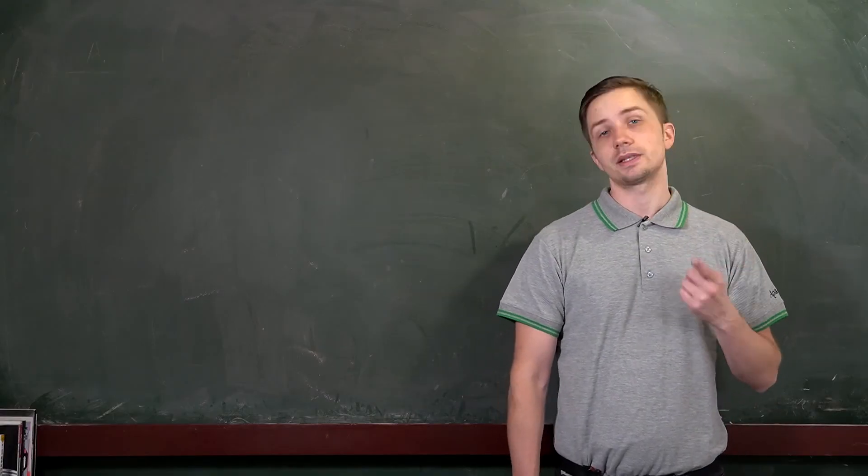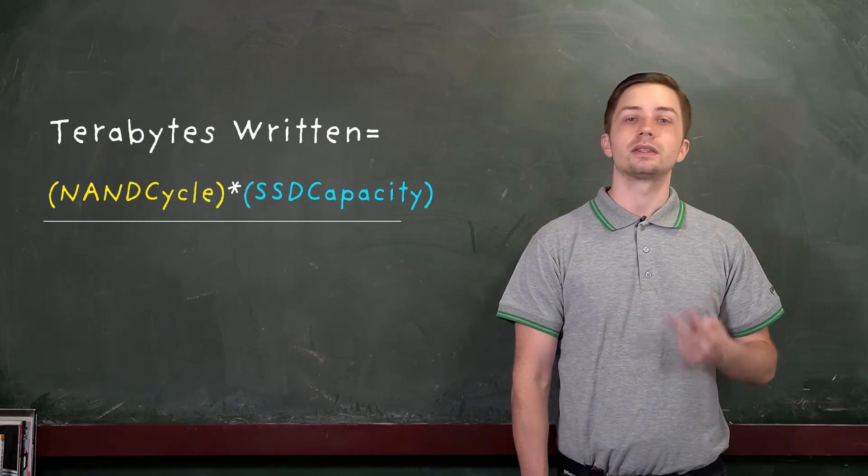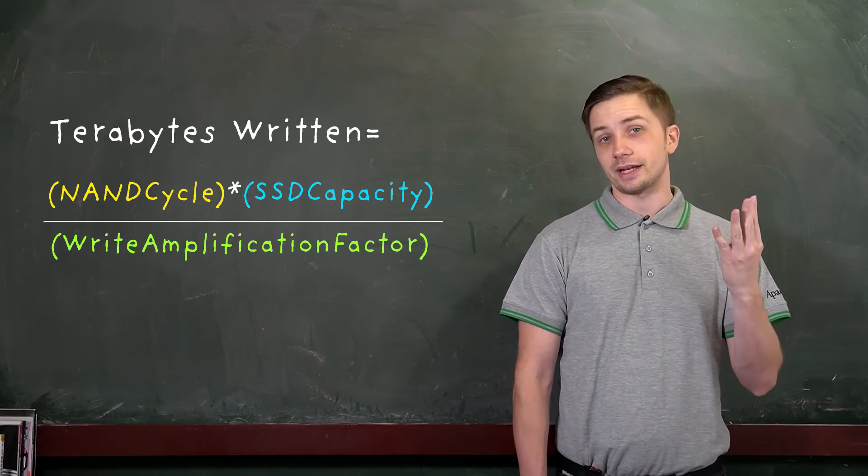So how do we determine TBW? Simple. First we take the total capacity of the SSD in question, then we multiply it by the NAND cycles, then we divide it by the write amplification factor.